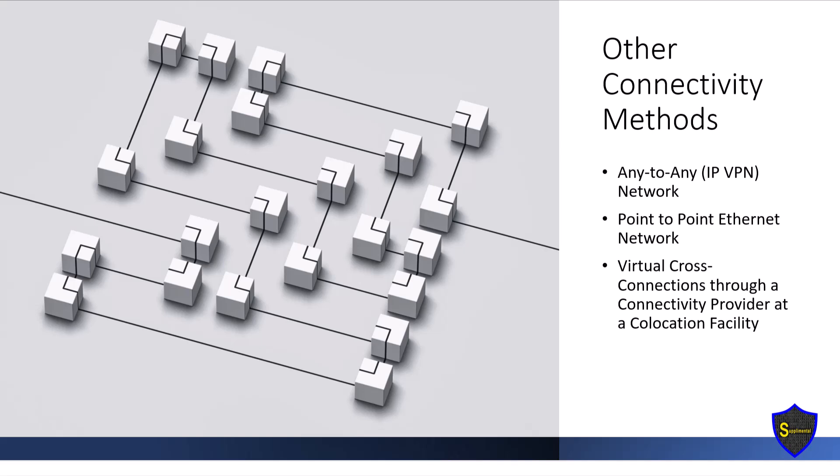Virtual cross-connection through a connectivity provider at a co-location facility: a co-location facility is a data center where multiple customers come to one location to keep their storage and server equipment and are interconnected to various telecommunications and network service providers. A virtual cross-connection allows for virtual interconnections between different entities within the same physical location, enabling efficient data exchange and network connectivity.